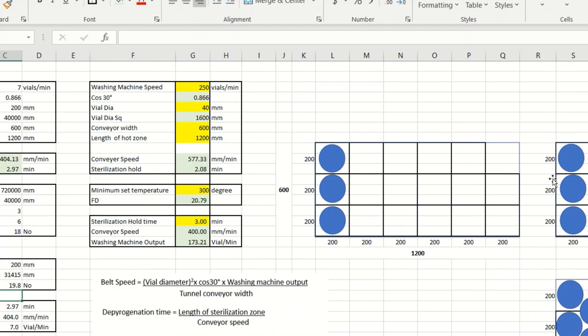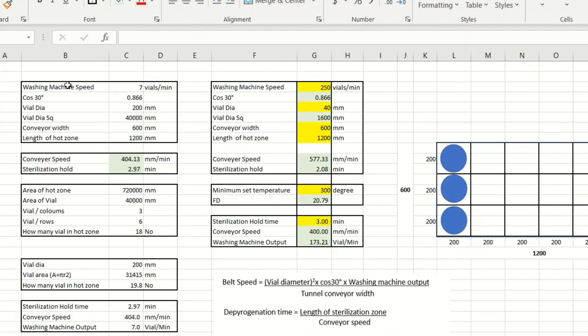If it is 1200mm per minute, it should be 18 vials per minute tunnel output. I hope you have remembered the model I have shown in the PPT.